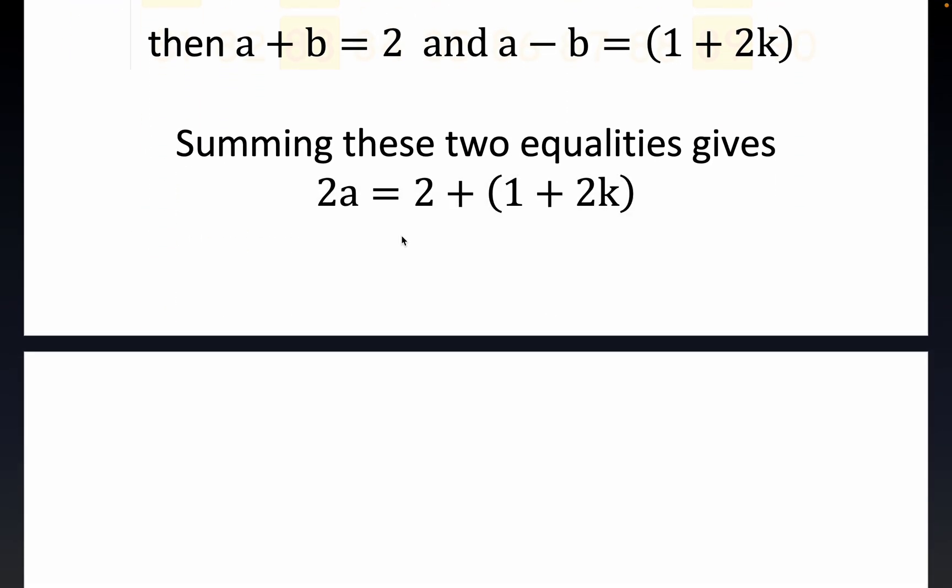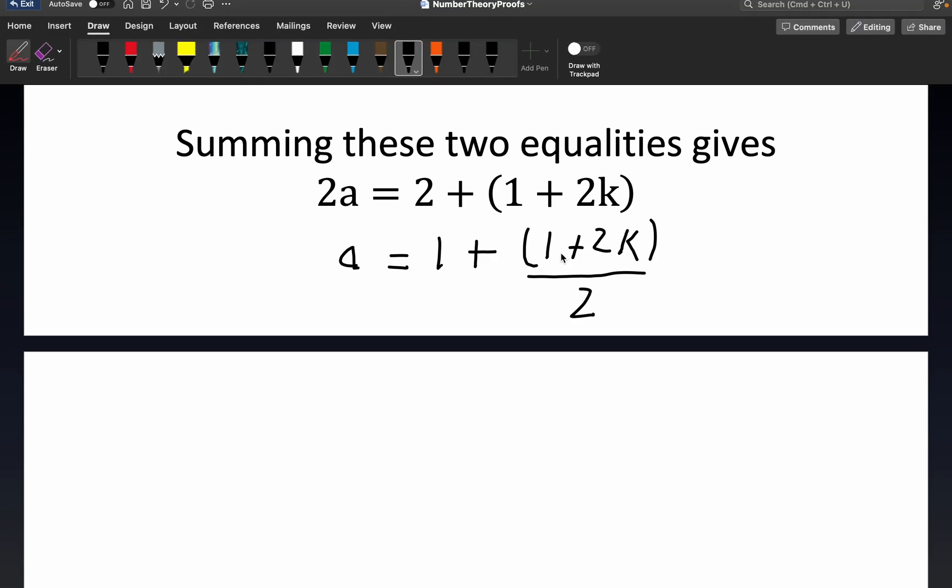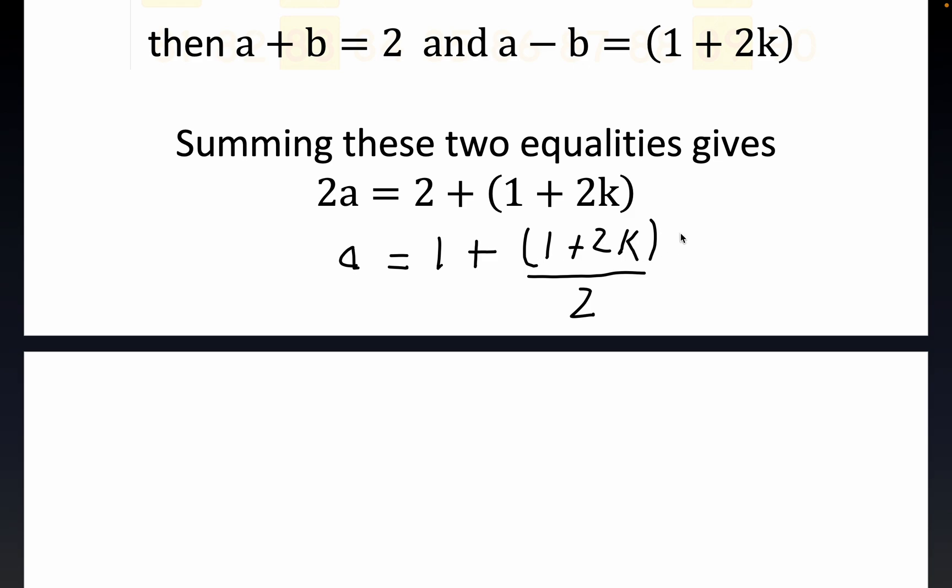But what happens here, folks? This implies that a, little a, is equal to 1 plus 1 plus 2k over 2. But guess what, folks? This is also not an integer. And this is more convincing than a single numerical case, right? Because you see, this is an odd number divided by an even number, right? 1 plus 2k is odd. The numerator is odd. So 1 plus an odd number over an even number is still, it's a member of q. Proud member of q. More in particular, I mean, it's not a member of z, right? So this happens no matter what.